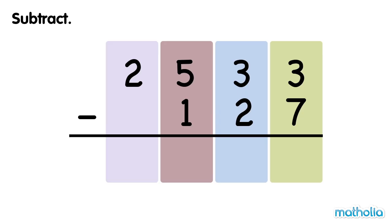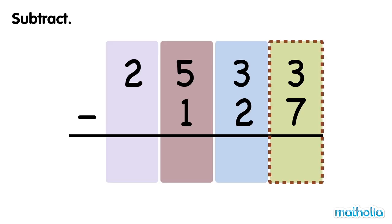Let's find 2,533 minus 127. Start by subtracting the ones. We cannot subtract 7 ones from 3 ones, so we regroup 1 ten into 10 ones.